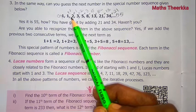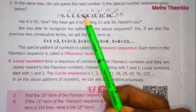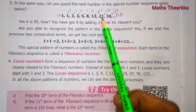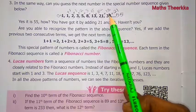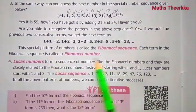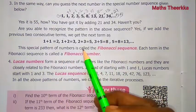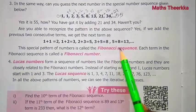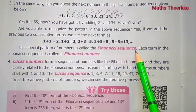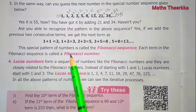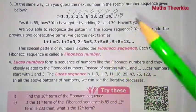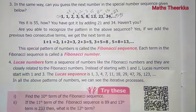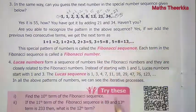So: 1+1=2, 2+1=3, 3+2=5, 5+3=8, 8+5=13, 13+8=21, 21+13=34, 34+21=55. This special pattern of numbers is called the Fibonacci sequence. Each term in the Fibonacci sequence is called a Fibonacci number. There are also Lucas numbers, which follow the same rule.